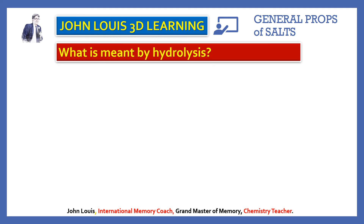What is meant by hydrolysis? The phenomenon by which a salt formed from a weak acid and strong base, or strong acid and weak base, becomes either acidic, alkaline, or neutral when dissolved in water is called hydrolysis. For example, sodium acetate (CH3COO⁻Na⁺): sodium comes from the strong base sodium hydroxide and acetate comes from the weak acid acetic acid. When dissolved in water, sodium acetate will be slightly alkaline — this phenomenon is known as hydrolysis.